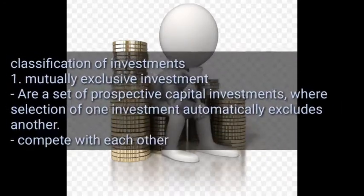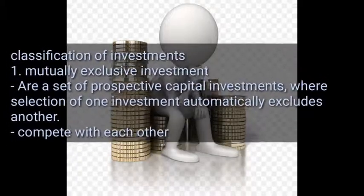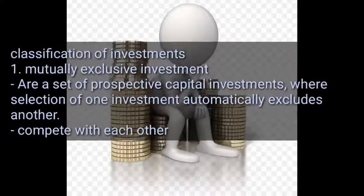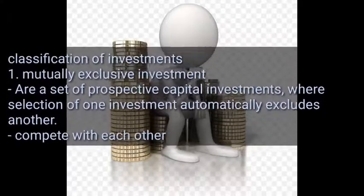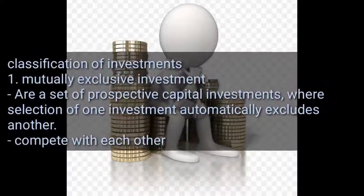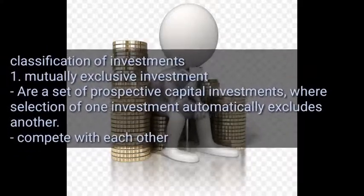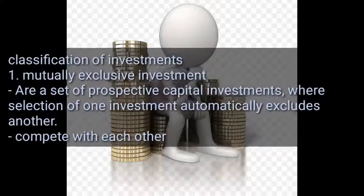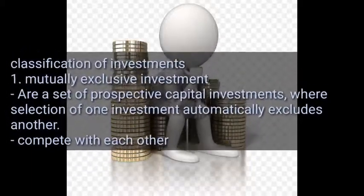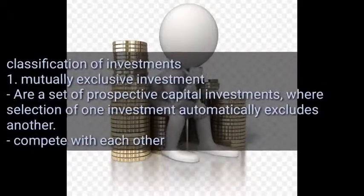Let's look at classifications of investments. First, investments can be mutually exclusive, whereby selection of one investment automatically excludes another — they compete with each other. An example is investments that require the same capital, whereby investing in one will automatically exclude another. If you have 10 million, you can only invest in one business and forgo the other.